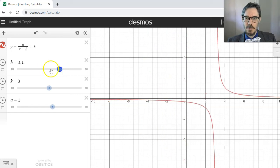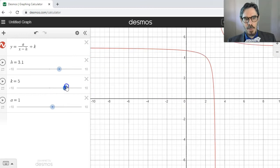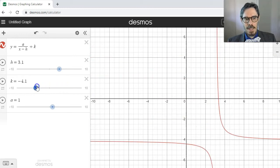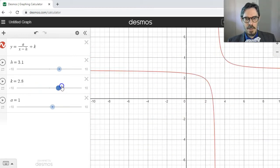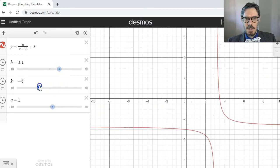And the same for k. If k is positive, I move up. And if k is negative, I move down. k positive, k negative.